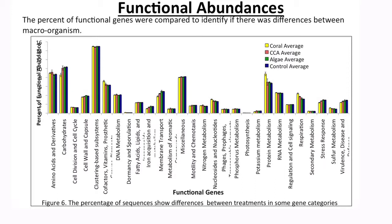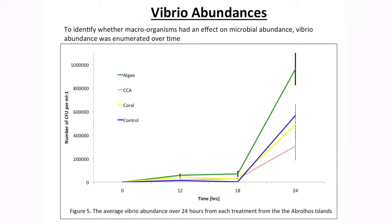In the coral example we saw the microbes increased in sulfur-based microbes associated with the sulfur cycle, which may actually influence and provide a nutrient that the coral requires. In our algae example we saw an increase in the number of Vibrios, and those organisms have many pathways — one of which showed an increased number of virulence-type genes. So we can now start pulling apart not only who is there in the microbial community, but what they could be doing.